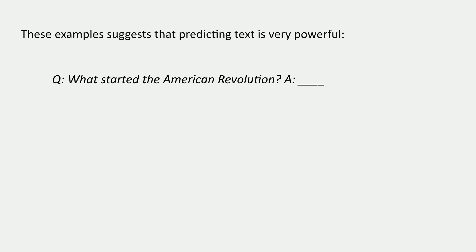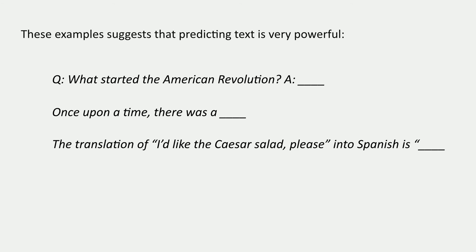If our predictive text is very, very good, it's going to be able to tell us, okay, give me an answer that looks like an answer to this question, right? Or, 'once upon a time, there was a blank.' If we keep predicting the next word, eventually we can get an entire story here. Or, we can even do the translation task that we had before. The translation of 'I'd like the Caesar salad, please' into Spanish is blank. The most likely next words here, somehow should be that translation into Spanish.